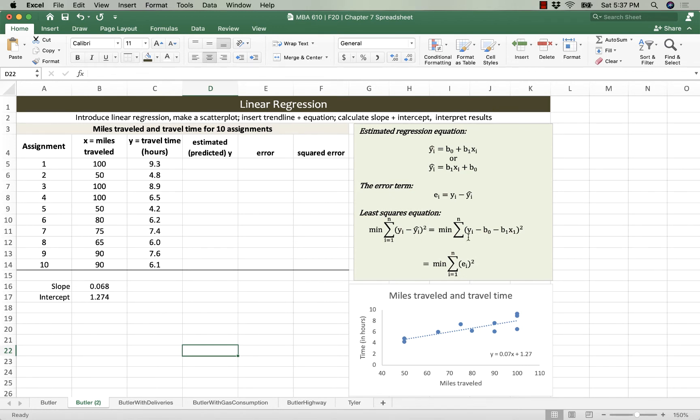We can also look at that in terms of the entire estimated regression equation, but simplest, I think, is down here in the bottom, where we just say that we're minimizing the sum of all of the squared errors, where the error is just that difference between our predicted value and our actual value.